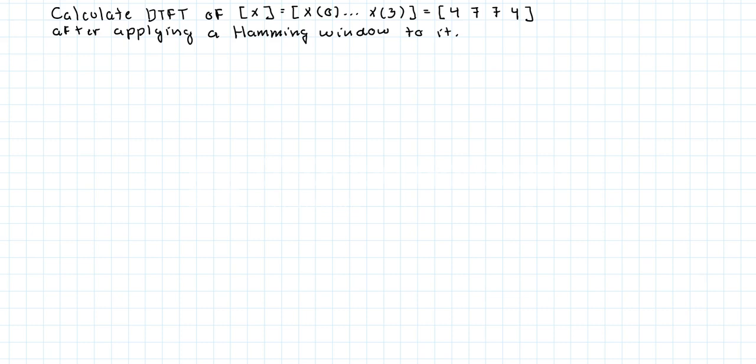Alright, in this problem we're asked to calculate the discrete time Fourier transform of the signal X, which goes from 0 to 3, and its numerical values are 4, 7, 7, 4.